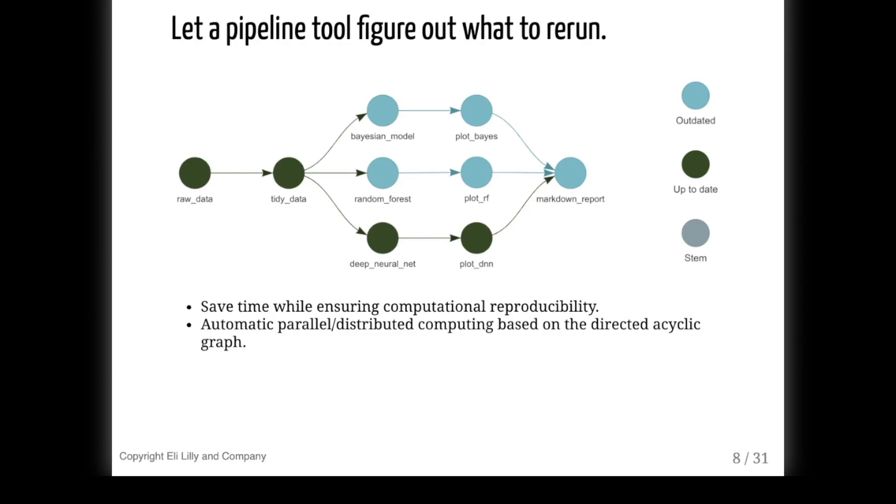This is exactly the job of a make-like pipeline tool. By identifying the inputs and outputs of each target, a make-like pipeline tool arranges the targets in a directed acyclic graph like the one shown here, and it runs the correct targets in the correct order. And by analyzing the graph, it even detects opportunities to use parallel computing or distributed computing to run multiple targets simultaneously. And of course, it automatically skips any targets whose code or upstream dependencies have not changed.